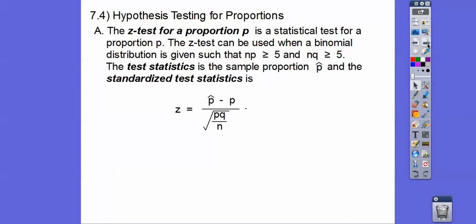So we've got to check that. Z equals P hat minus P divided by the square root of PQ over N. Does this look familiar? It should.